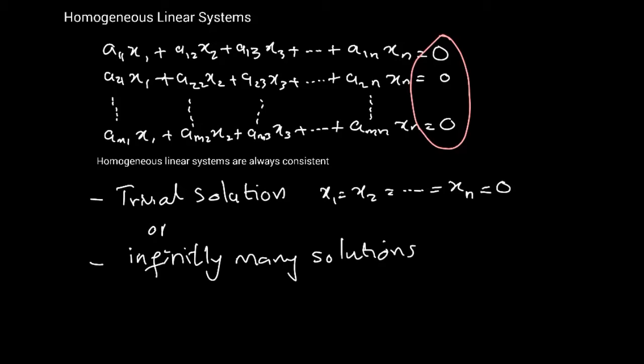Either it is non-trivial, these are infinitely many solutions, this is known as the non-trivial solution, also known as non-trivial. This applies only to homogeneous systems. Either you can have non-trivial solutions or trivial solutions, only two possibilities.